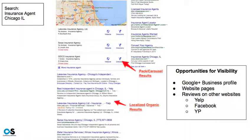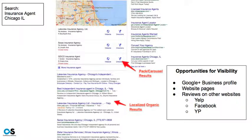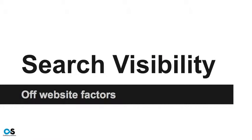Most of those factors have nothing to do with your website, at least not directly. A lot of things that return in search results are not your website. So increasingly, you don't necessarily get to tell your own story — there are other people and third-party websites putting you out there. A significant and really important portion of your search visibility is driven by off-website factors.